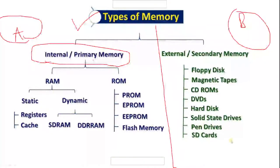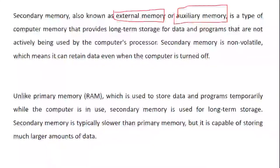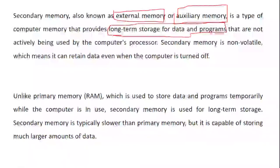We will also look at one question from the October 2021 examination on this topic. First, let's understand what secondary memory is. Secondary memory is also called external memory or auxiliary memory — just as primary memory is called internal or main memory. It is a type of computer memory that provides long-term storage of data and programs that are not actively used by the computer processor. These highlighted terms are possible to appear in statement or assertion-reasoning questions.